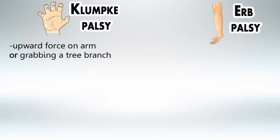Somebody is falling and grabs a tree branch as they fall, their arms would stretch up, and this will cause Klumpke Palsy. While Erb Palsy is mainly caused by lateral traction of the neck.